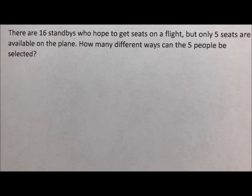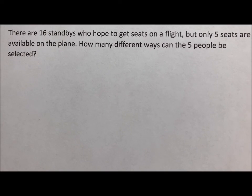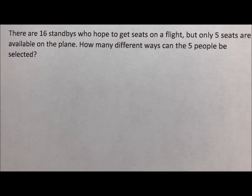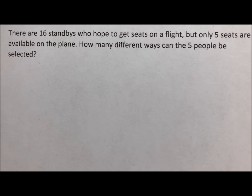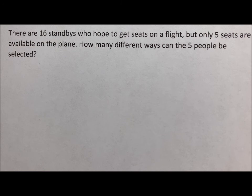Welcome to RoarMath. Today I'm doing a series of videos on permutation and combination. There are 16 standbys who hope to get seats on a flight, but only five seats are available on the plane. How many different ways can the five people be selected?